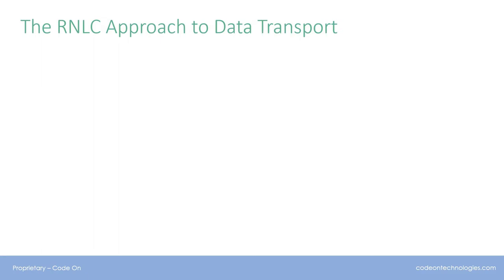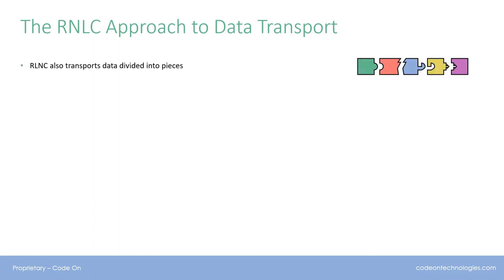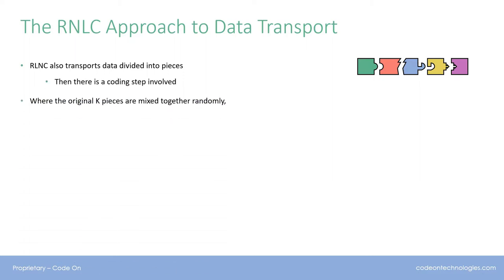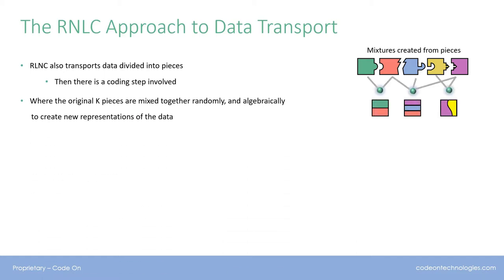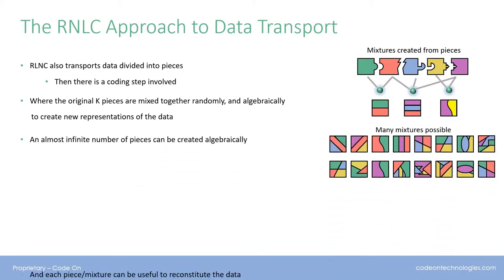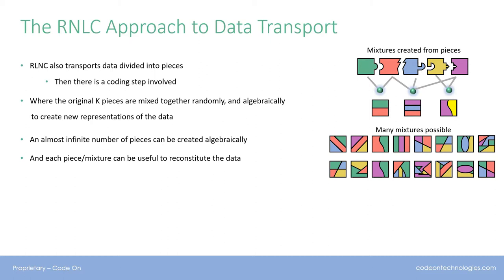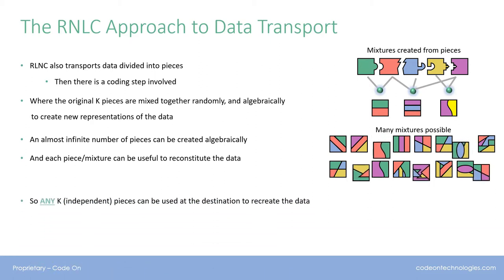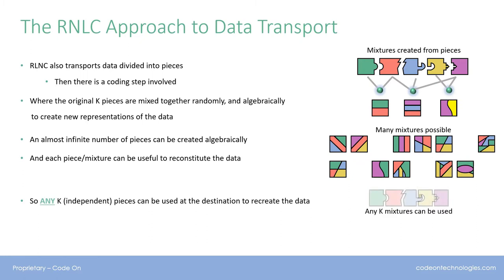So, how does RLNC differ? Well, RLNC also transports data divided into pieces. Then there's a coding step involved. This is where the original k pieces are mixed together, randomly, using linear algebra, to create new representations of the data. Using this method, an almost infinite number of pieces can be created, and each piece or mixture can be useful to reconstitute the data. So any k independent pieces could be used at the destination to decode for the data.